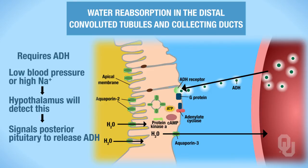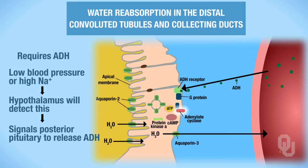ADH binds to the receptor on the basolateral membrane of the distal convoluted tubule or the collecting duct. When ADH binds, that activates your G protein — the alpha subunit slides over, you activate adenylate cyclase, which is that red little critter. Once adenylate cyclase is activated, ATP gets converted to cyclic AMP.